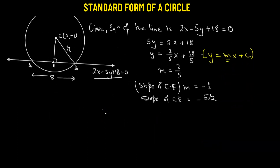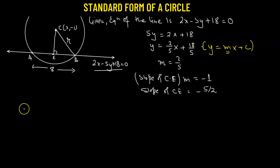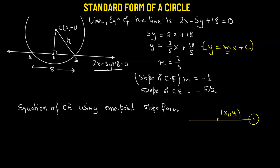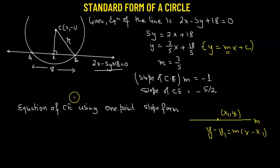Now we have the slope of CE, so we find its equation using the point-slope form. The point-slope form states: if a line passes through point (x₁, y₁) with slope m, then y minus y₁ equals m times (x minus x₁). In our case, the point is (3, -1) and the slope is negative 5/2.